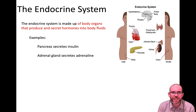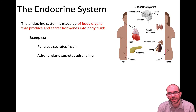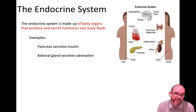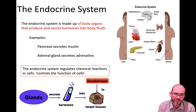The endocrine system is a collection of the body's organs that are able to produce and secrete hormones into the body's fluids. For example, the pancreas secretes insulin, which regulates blood sugar, and the adrenal glands will release adrenaline to cause the fight, flight, or freeze response. They do all of this by using chemical reactions, specifically regulating when they turn on and when they turn off.